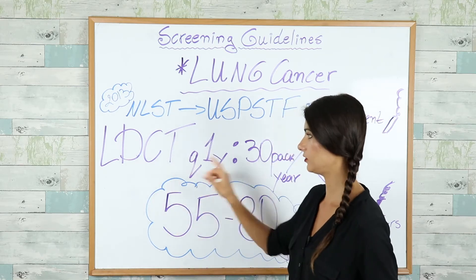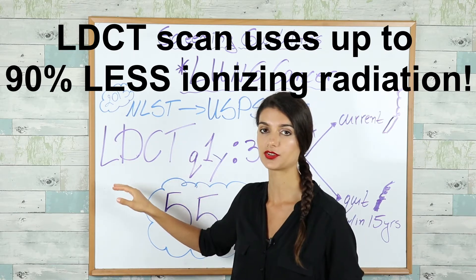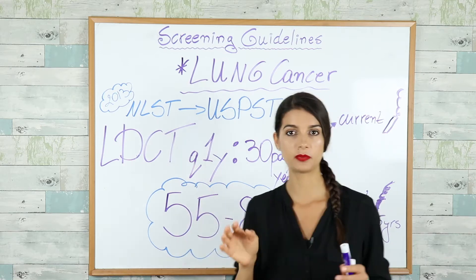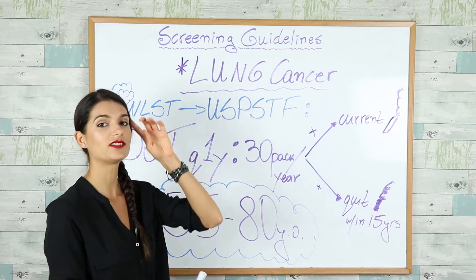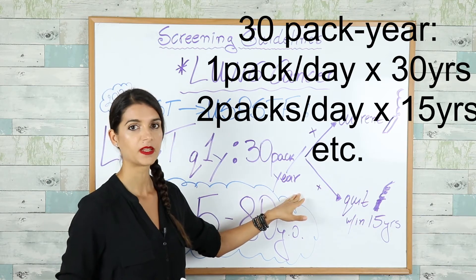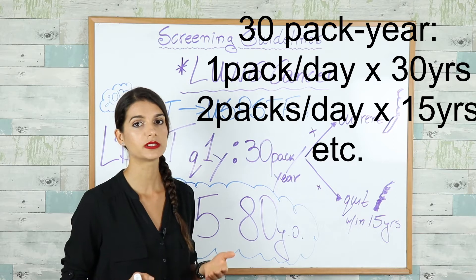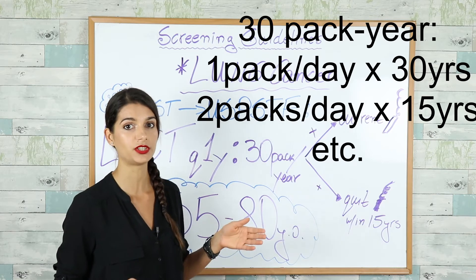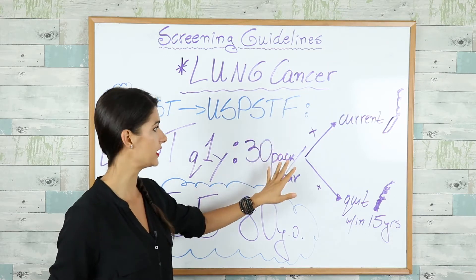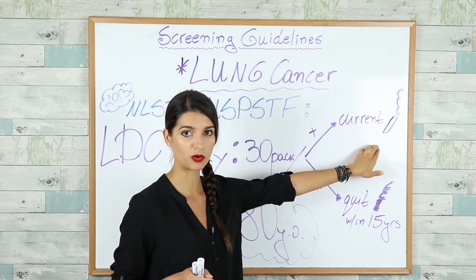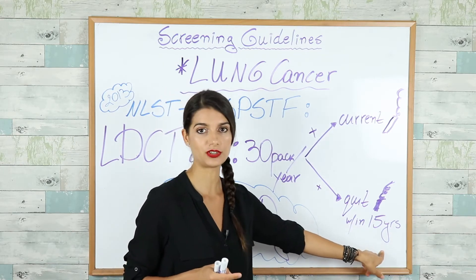We screen every year with low-dose CT scan, which uses up to 90% less ionizing radiation than a normal CT scan, for the following people: they have to be between 55 and 80 years of age and have a history of 30 pack-years of smoking — meaning they smoked either 2 packs a day for 15 years or 1 pack a day for 30 years. They must be either current smokers or have quit within the last 15 years.